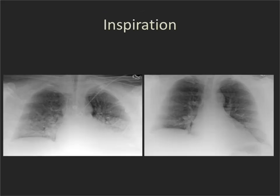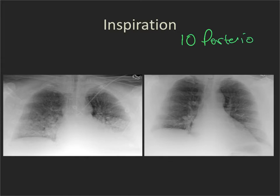The degree of inspiration can really produce a significant abnormality. A good assessment for an adequate degree of inspiration is 10 posterior ribs down to the hemidiaphragms — remember, posterior, not anterior. Someone who's very young and fit with good aerobic capacity might be able to pull their diaphragms down to 12 posterior ribs, but that doesn't mean they're necessarily hyperinflated as long as they maintain a normal degree of curvature of their hemidiaphragms.